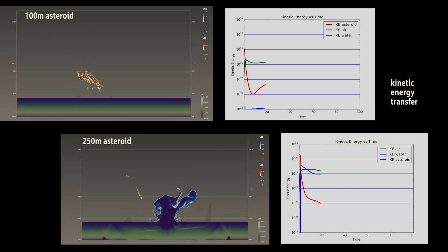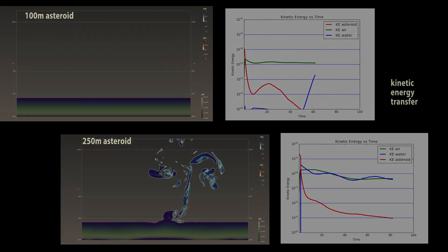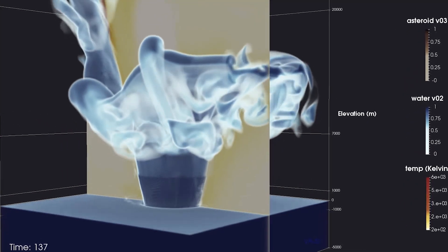Here we see two cases varying asteroid size, on the right a plot showing the transfer of kinetic energy from the asteroid to the water and air. Pressure waves in both the air and water show differences in the transfer of kinetic energy.